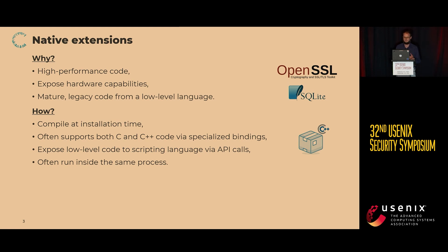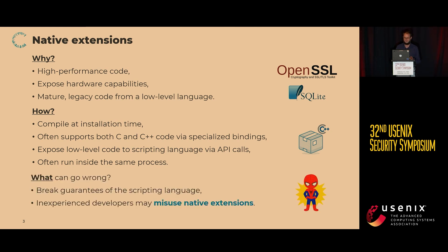How does a native extension work? At install time, the C++ code is compiled. It offers support for both C and C++ via specialized bindings that you import in the C code, and it exposes low-level code via specialized interfaces in the scripting language, often running in the same process. This means that low-level problems from C and C++ code — like those caused by manual memory management — can leak into the scripting language. Developers don't expect that to happen. But more importantly, you can also misuse the native API interfaces, which could lead to all kinds of problems.